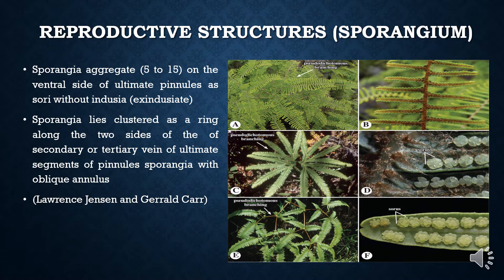The spores are haploid structures that germinate to produce the gametophyte, which in turn produces the gametes, which fertilize to produce the sporophytic generation. The sporangia are borne on the lower or ventral side of the pinna. In this picture we see the lower side of the pinna, with sporangia in a row on either side of the terminal costa or terminal vein, which can be a secondary or a tertiary vein.